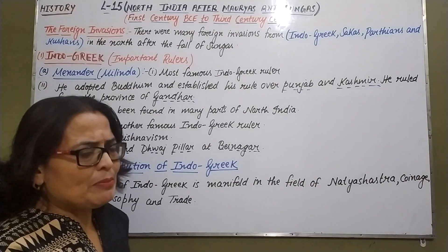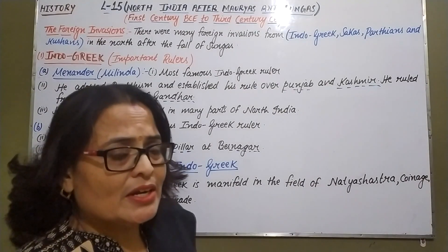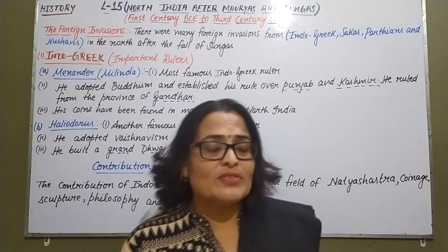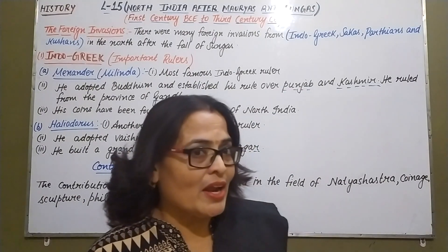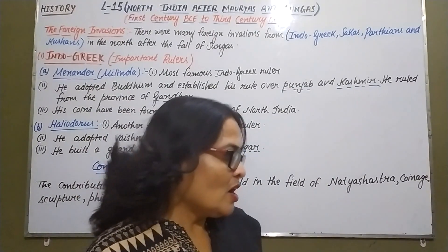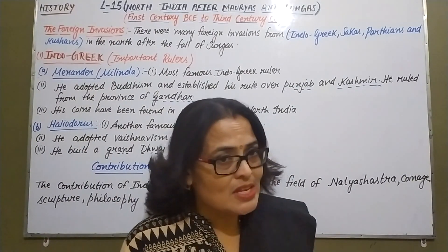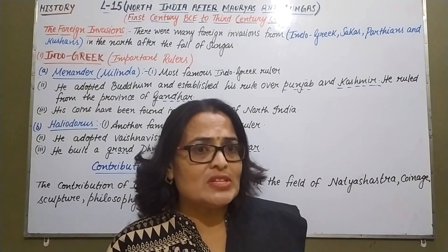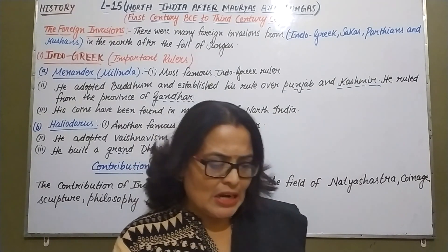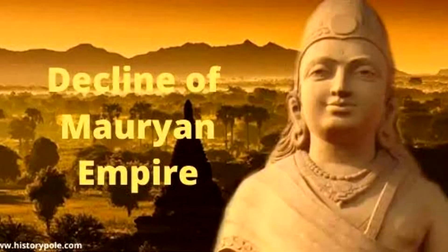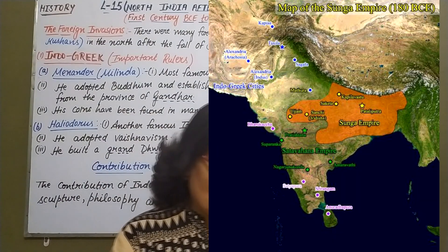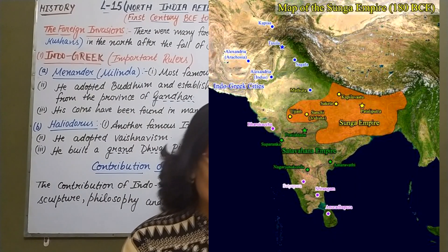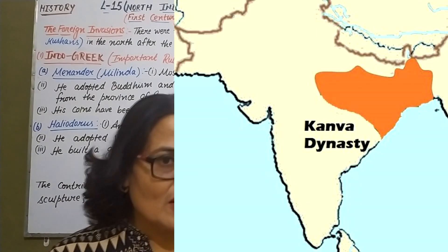You must remember that in the previous chapter, that is chapter number 13, you have studied about the Mauryan Empire. And in chapter number 14, the early history of Deccan and South India. In this chapter, we will study what happened after the decline of the Mauryan Empire — power came into the hands of the Sunga and Kanwa dynasties.